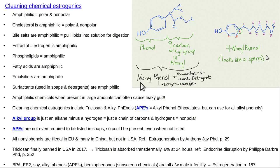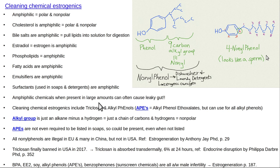Nonylphenol is a major estrogenic cleaning chemical — 'non' meaning nine carbons attached to a phenol group. That is your typical laundry detergent. To avoid this estrogen, you do not need laundry detergent. You don't want to go to dry cleaners either — the chemicals there are toxic. Everybody is scared of spiders and snakes, but people should be more scared of chemicals. If you are working with a toxic chemical, open a door, ventilate the room — you will rapidly minimize the concentration.